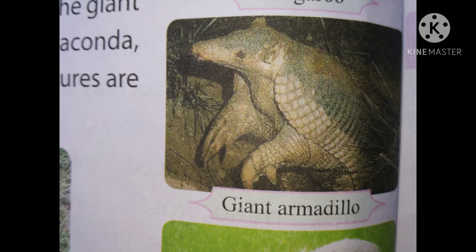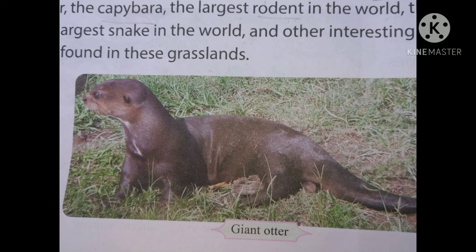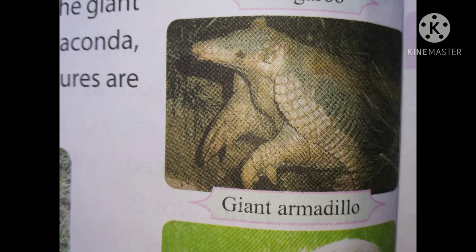Children, the giant armadillo — you can see in this picture — the giant otter and the capybara. The capybara is the largest rodent in the world. Rodent means animals that can cut anything with their teeth — for example, a rat is also a rodent. Similarly, the giant armadillo and giant otter also cut things with their teeth, like a rat.